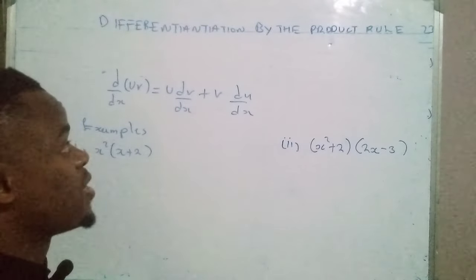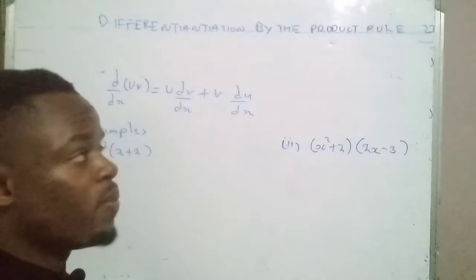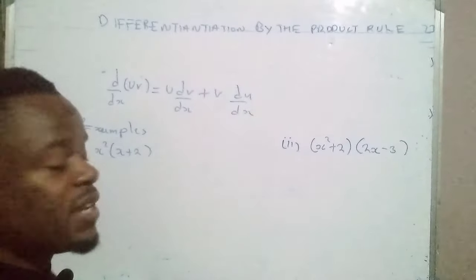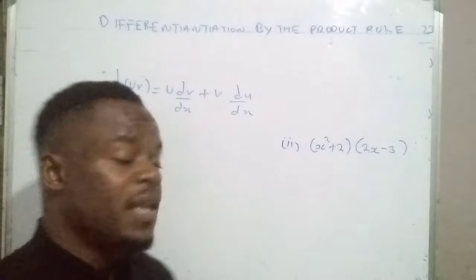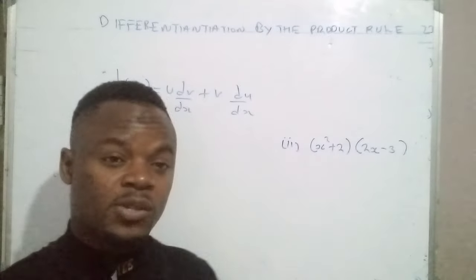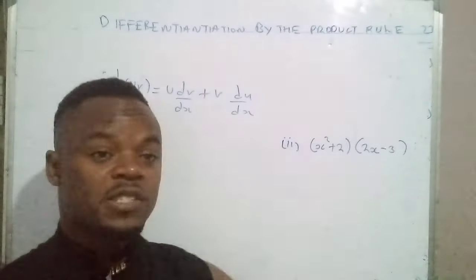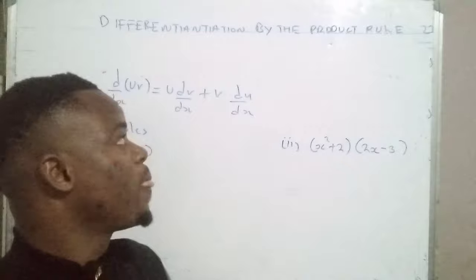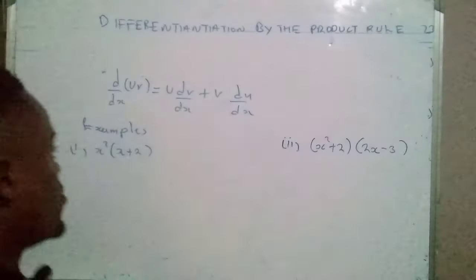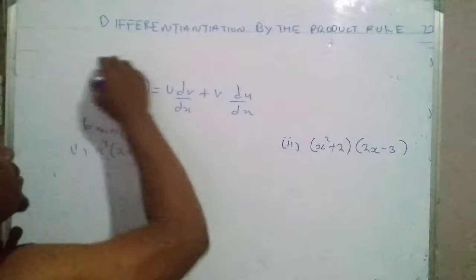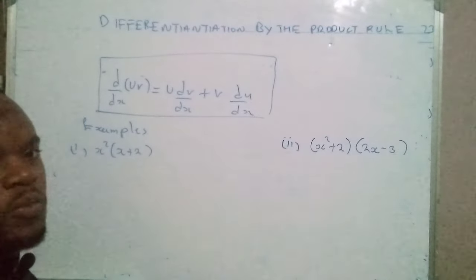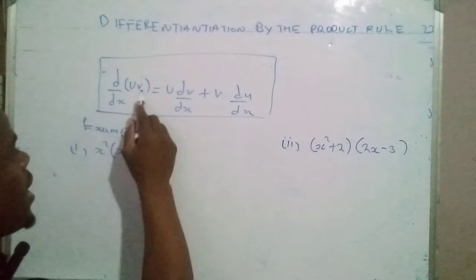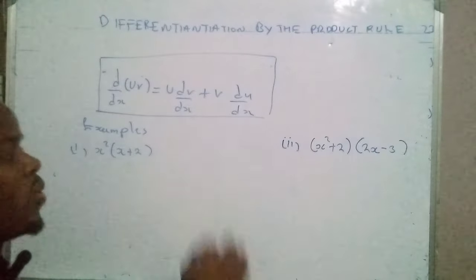The rule under calculus that we're going to focus on is called the product rule. When is it applicable? This rule is only applicable when you're differentiating and dealing with the product of two functions. When you have two functions that are being multiplied, you can apply the product rule. This is all applicable when the functions u and v are differentiable.